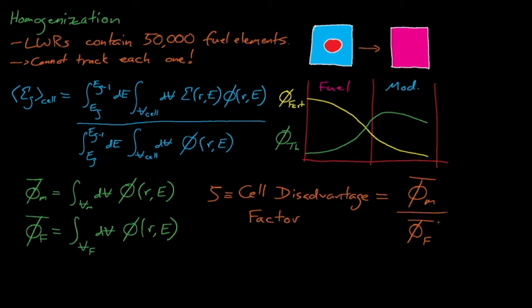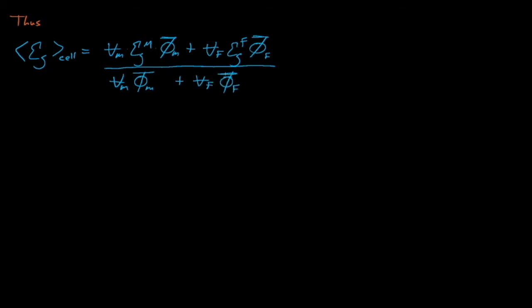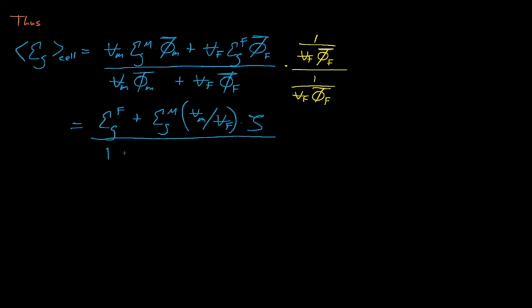This flux depression causes the average flux in the fuel pin to be much smaller than the average flux in the moderator, and hence causes the disadvantage factor to be greater than 1. So how does knowing the flux disadvantage factor help us? Well, let's go back to our average cross-section equations. If we substitute in the average fluxes and average cross-sections for the fuel and moderator regions, as well as the volumes Vm and Vf, then we can obtain this expression. Dividing both sides by Vf times the fuel average flux yields this expression,